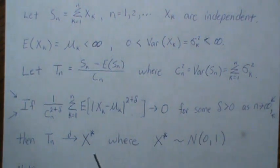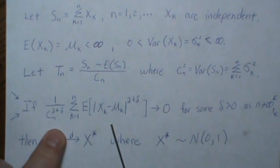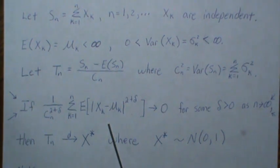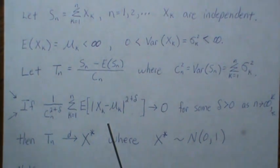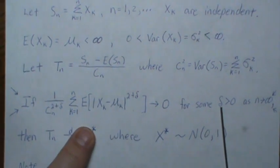Then Tn converges to a random variable that has a standard normal distribution. Now this condition is sometimes easier to prove than Lindeberg's condition, and so this just has to hold for some delta.